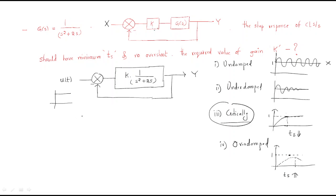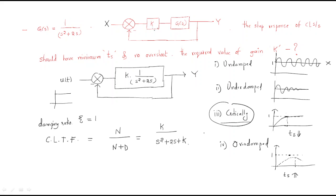The critically damped system has minimum settling time with no overshoot, which matches the given requirements. For a critically damped system, the damping ratio ζ equals 1. The closed-loop transfer function is K/(s²+2s+K). Comparing with the standard form ωn²/(s²+2ζωn·s+ωn²), we get: 2ζωn = 2 and ωn² = K.